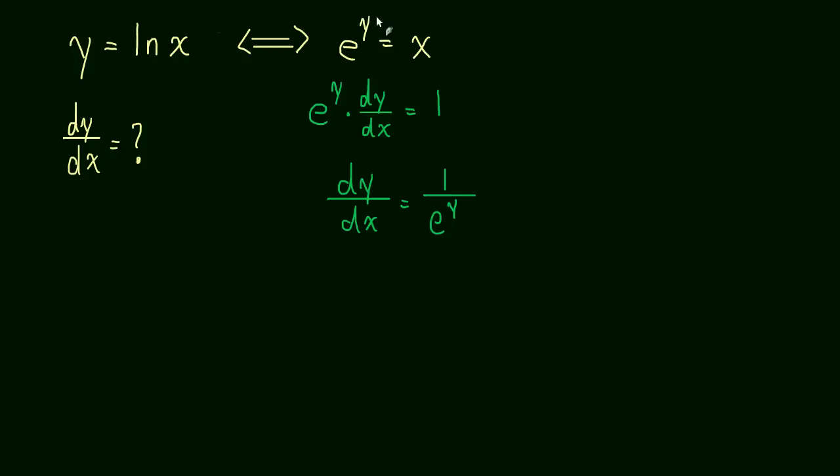Okay, so we found the derivative, but we're going to go one step further and just look up here and say, well, e to the y is equal to x. So this derivative dy dx is equal to 1 over x.